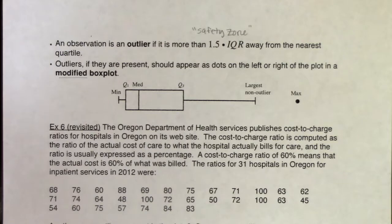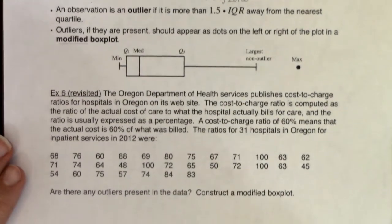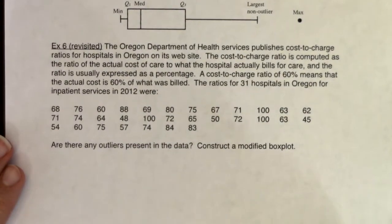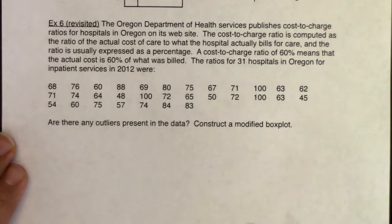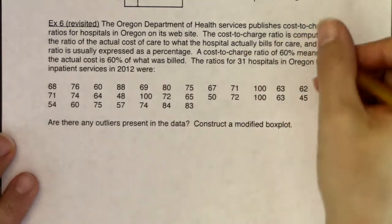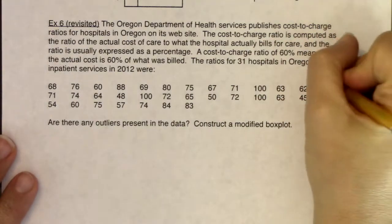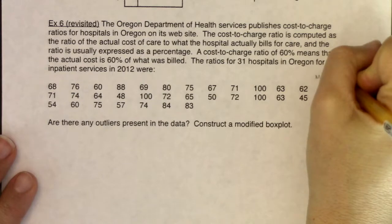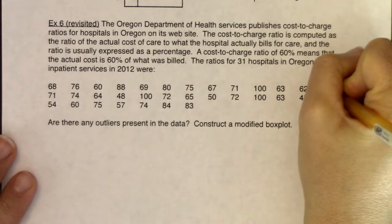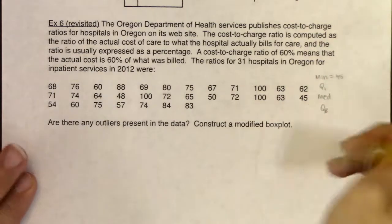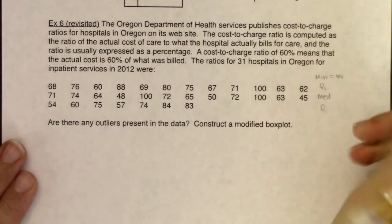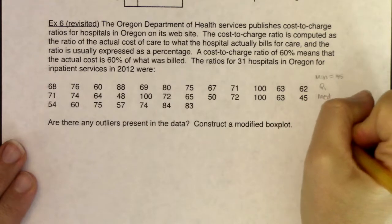There are three steps you need to take to determine if you have outliers present in your data. We're going to revisit the Oregon Department of Health data on hospitals and their cost-to-charge ratios. I'm going to write the five-number summary here: min, Q1, median, Q3, and max.